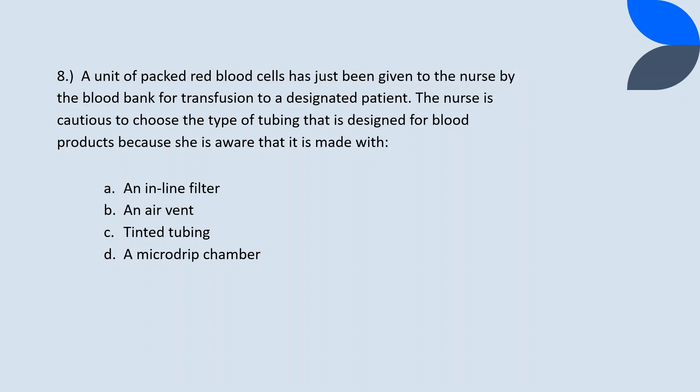Question 8. A unit of packed RBC has just been given to the nurse by the blood bank for transfusion to a designated patient. The nurse is cautious to choose the type of tubing that is designed for blood products because she is aware that it is made with an inline filter. The filter helps ensure that any large particles are filtered and are not infused into the patient. An air vent is unnecessary because the blood bag is not made of glass. Option C is incorrect because the blood does not need to be protected from light. The tubing should be macro-dripped to allow blood to flow freely through the drip chamber.